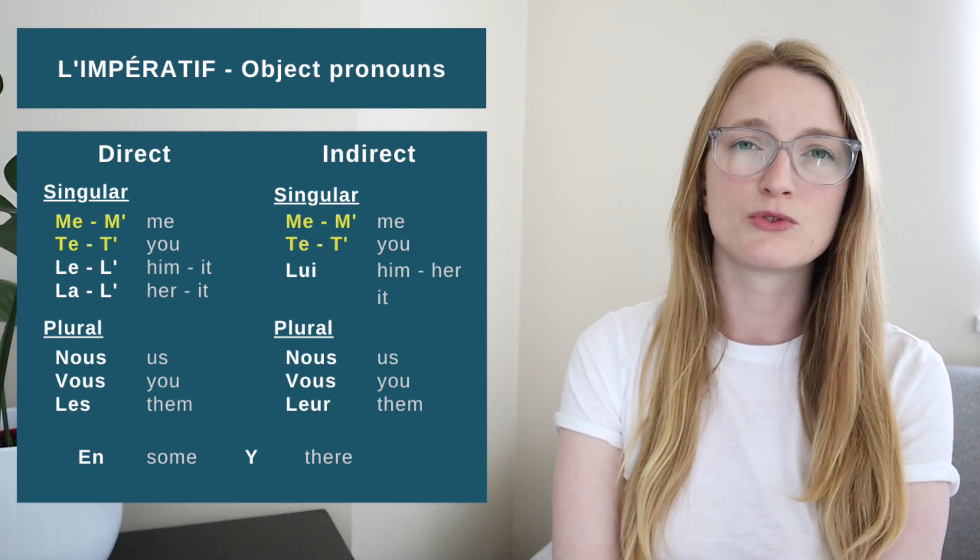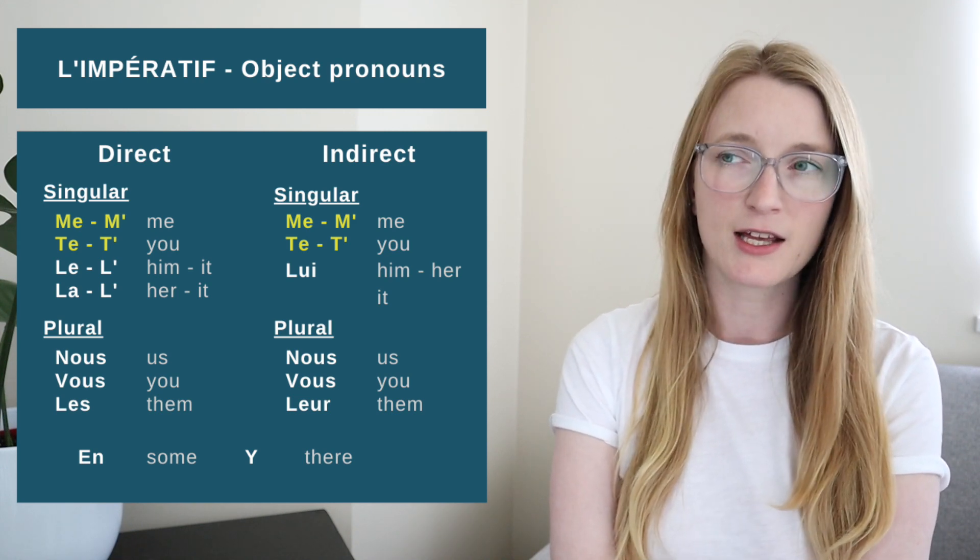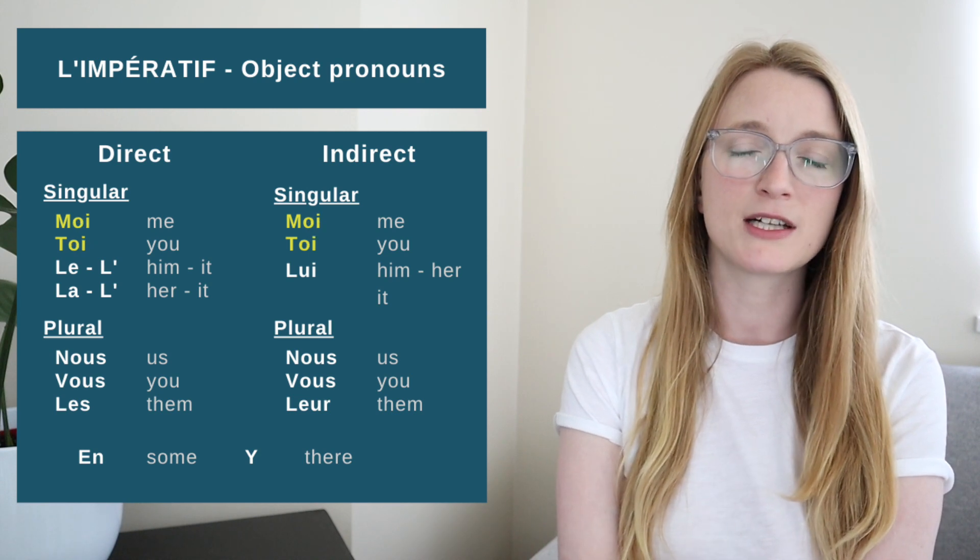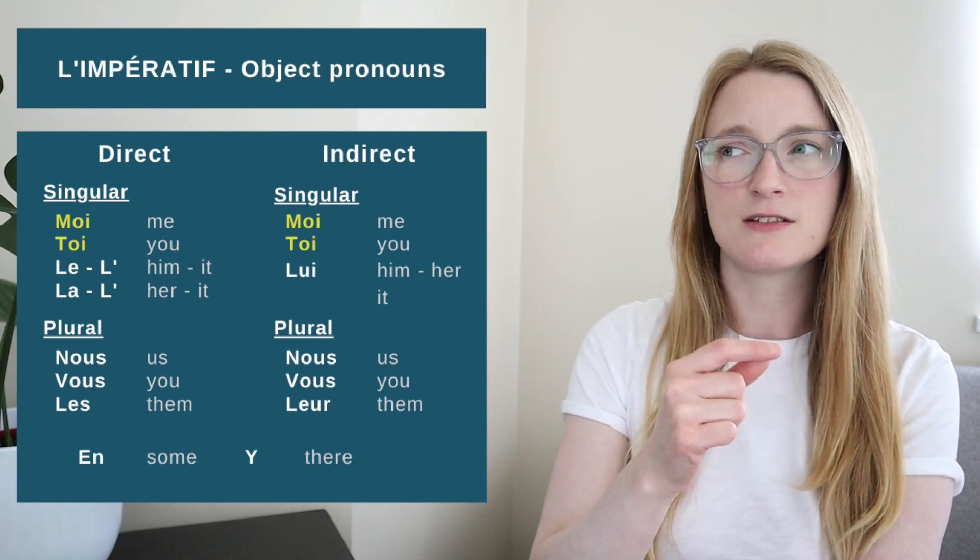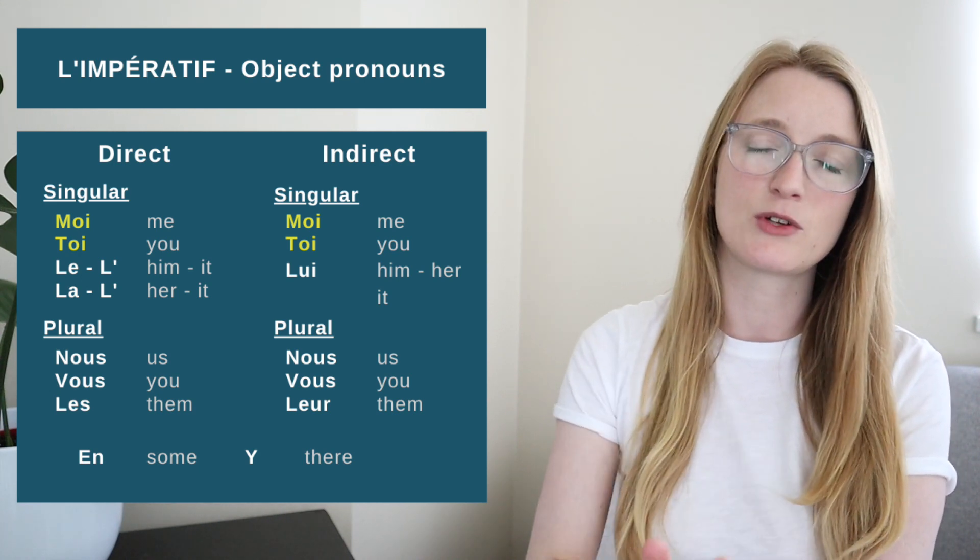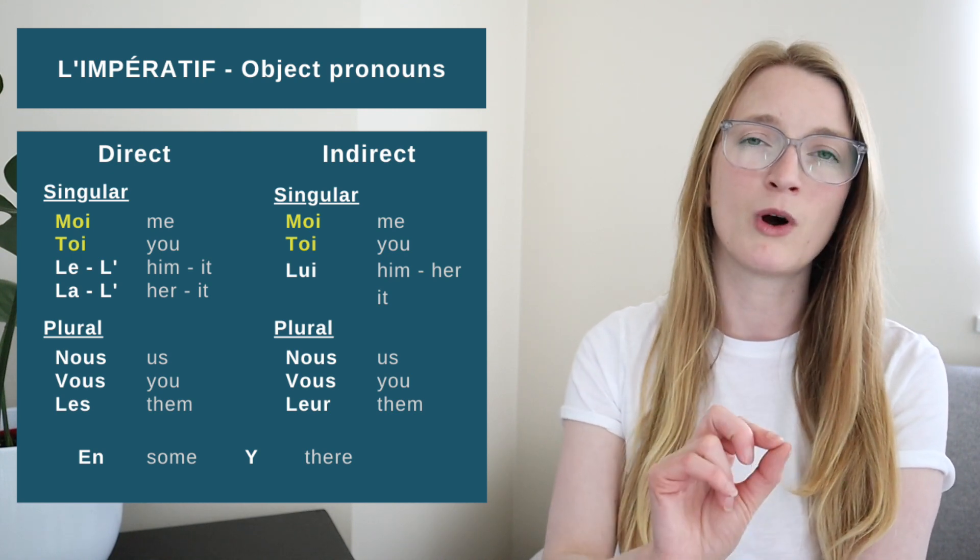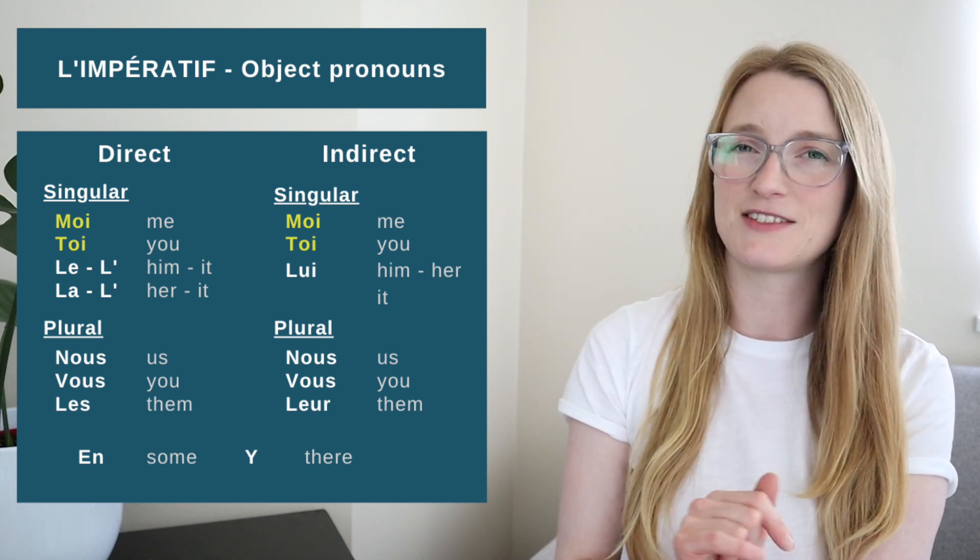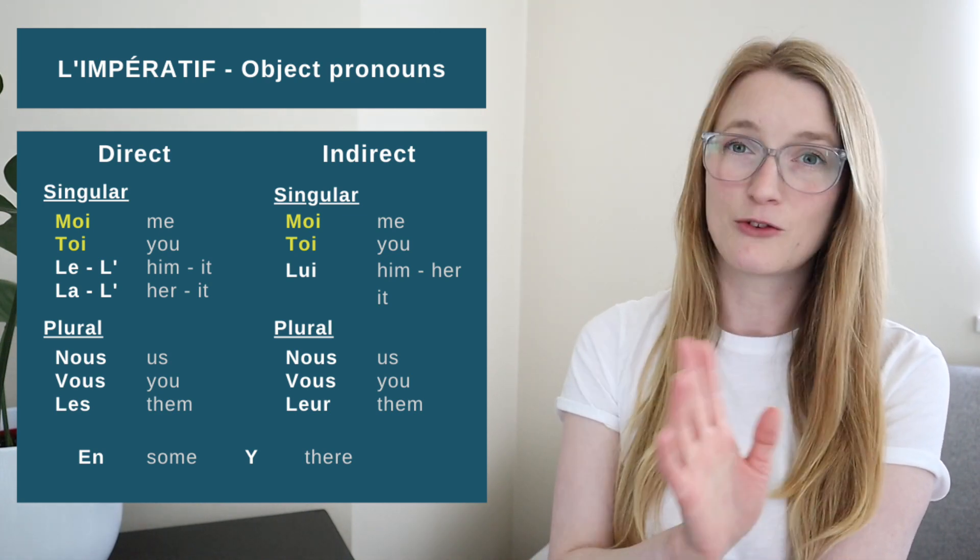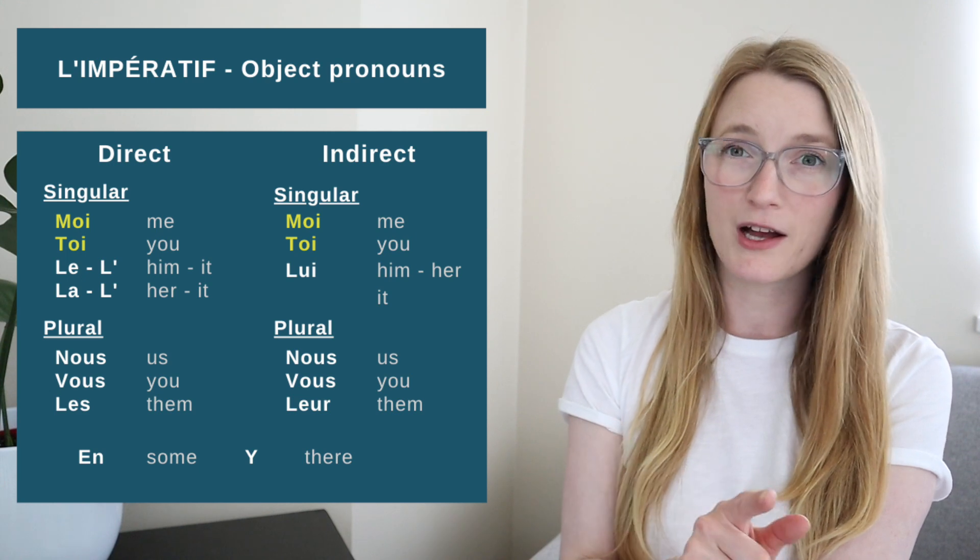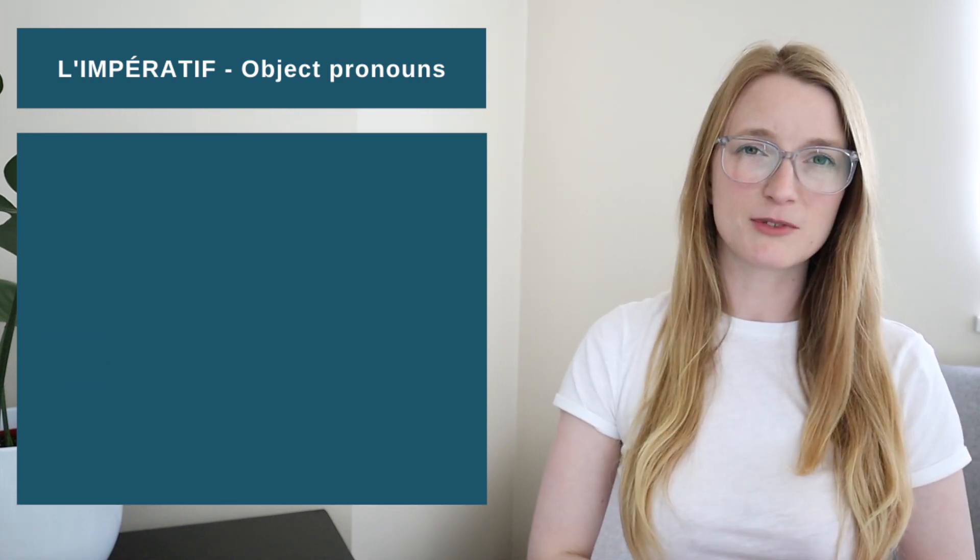We do have a very particular change for Me and Te. So both are direct object pronoun and indirect object pronoun. They are going to become Moi and Toi when they are after the verb. And in affirmative sentences, they are going to be after the verb. In affirmative sentences, they are going to become Moi and Toi. Not in negative sentences, but we're going to see that later. I also have a little tip for you to remember it. Let's jump right into the subject with sentences.